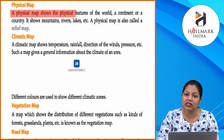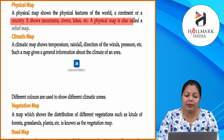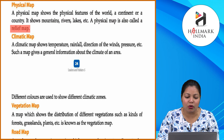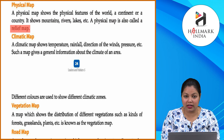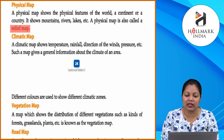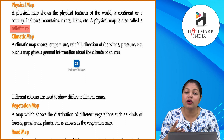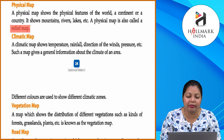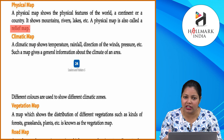Now, physical map. A physical map shows the physical features of the world, a continent, or a country. It shows mountains, rivers, lakes, etc. A physical map is also called a relief map. Physical map jo hai wo kisi bhi area ka physical features dikhata hai — world ka, continent ke baare mein, country ke baare mein. Mountains, lakes, rivers — yeh sari chizein dikhata hai. Isse relief map bhi bola jata hai.